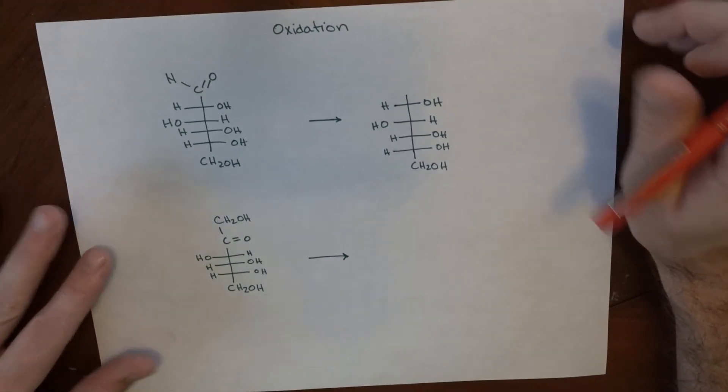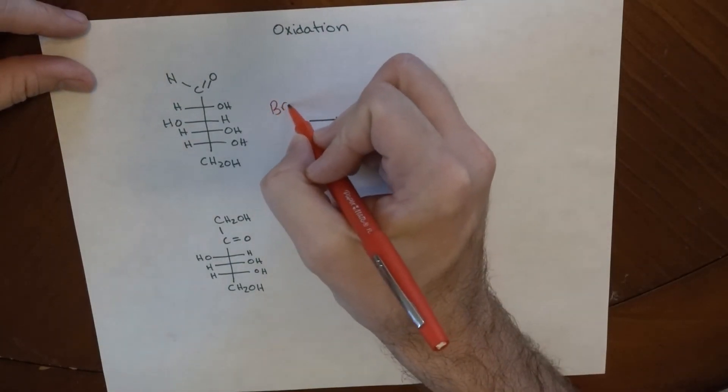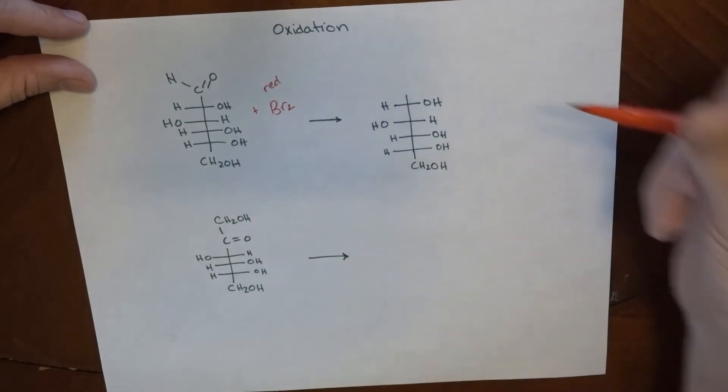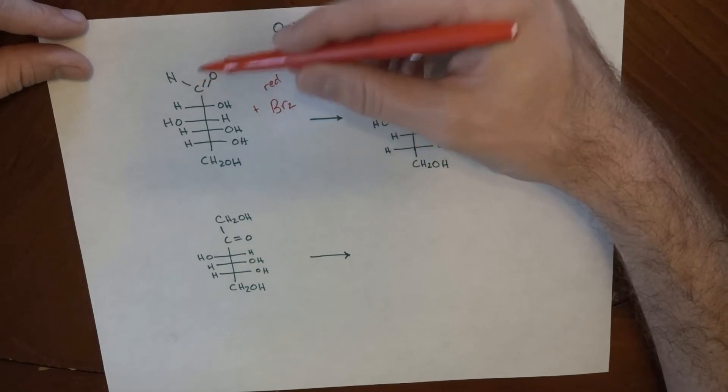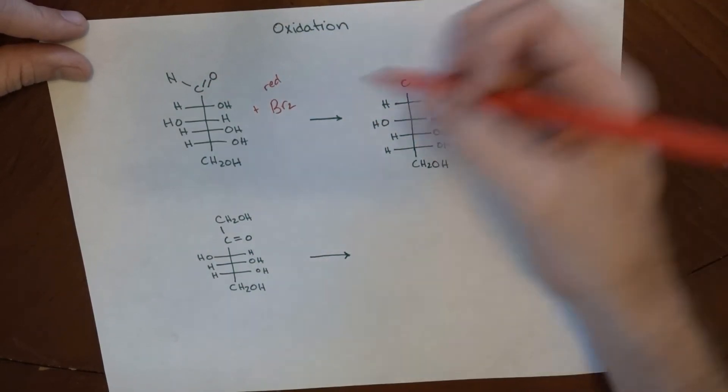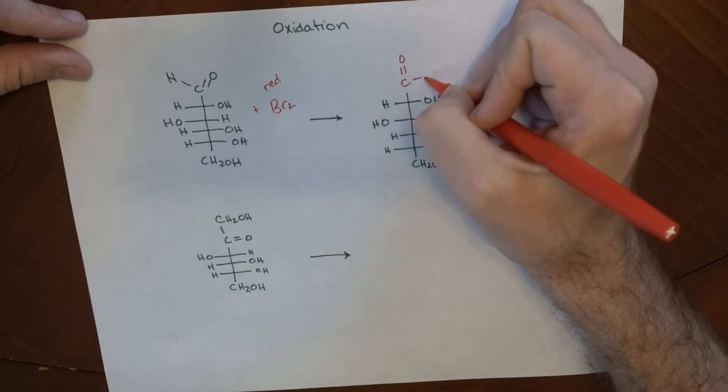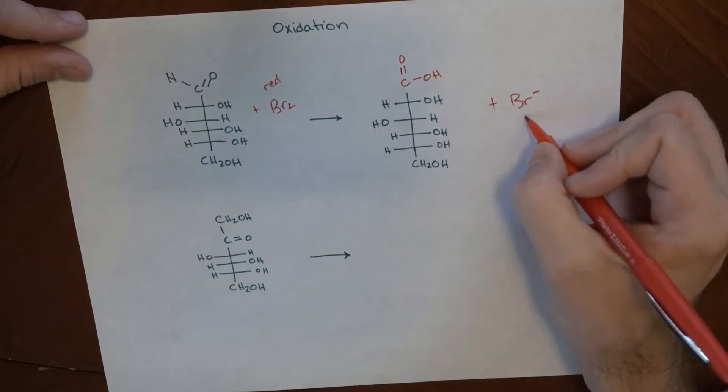Now, another kind of reaction that we can have happen is an oxidation reaction. The oxidation reaction can take place in a number of ways, and one of the reagents that works is using bromine, Br2. This is sort of like a reddish-brown. If this is entered into a solution that has something like an aldehyde in there, it can oxidize that aldehyde - this would end up being reduced - and it can oxidize this aldehyde into making a carboxylic acid and bromide ion. And this is colorless.